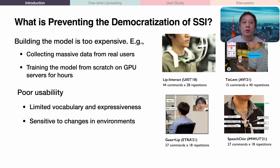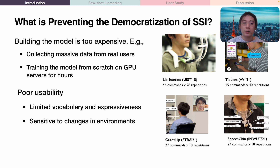However, most previous lip-reading systems, which use train-from-scratch models, require the user to provide a large amount of training data. This process is tedious and time-consuming, and the model can only be trained on GPU servers, which is also expensive. As a result, the user would not be able to use custom commands, leading to very limited vocabulary.